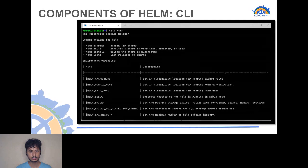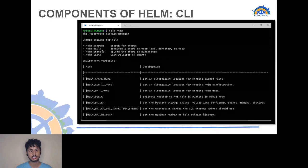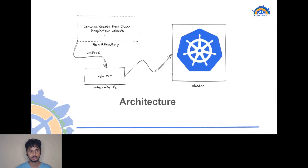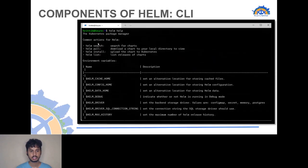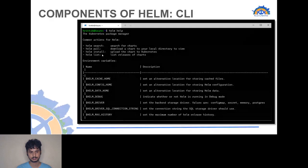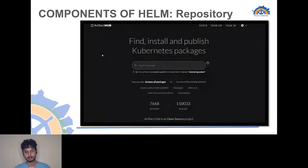There are several useful Helm commands: if you want to search a repository, you can use 'helm search'; to pull an image from the Helm repository, use 'helm pull'; 'helm install' helps you install the repository you've pulled; and 'helm list' shows all the charts available in your cluster. Artifact Hub is where you can put all of your repositories so people can use them.